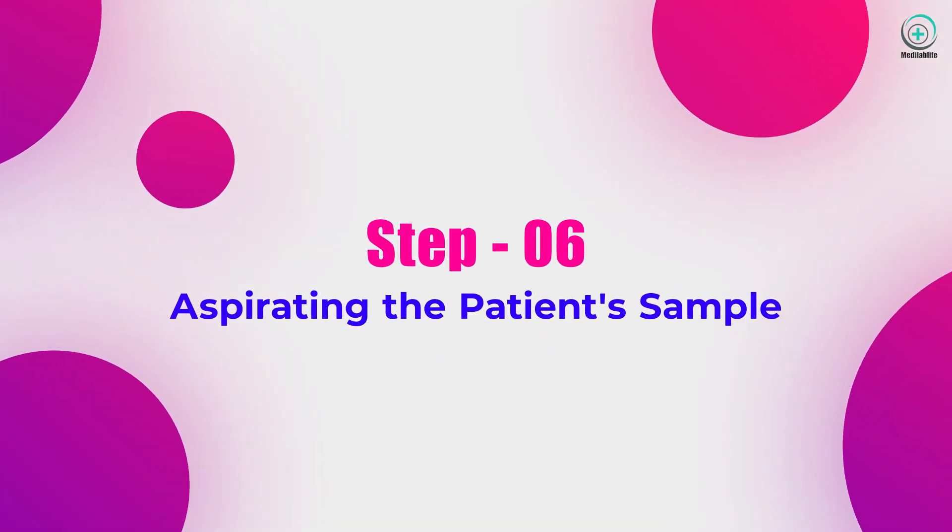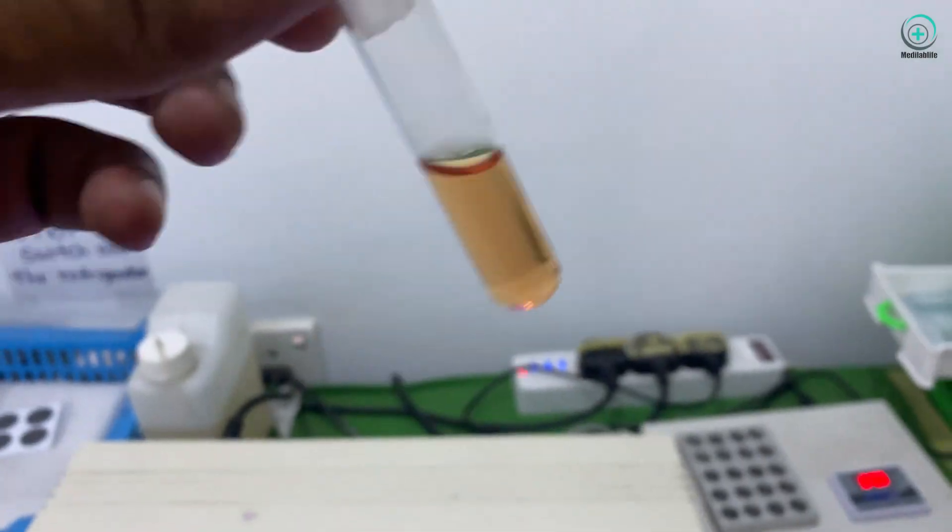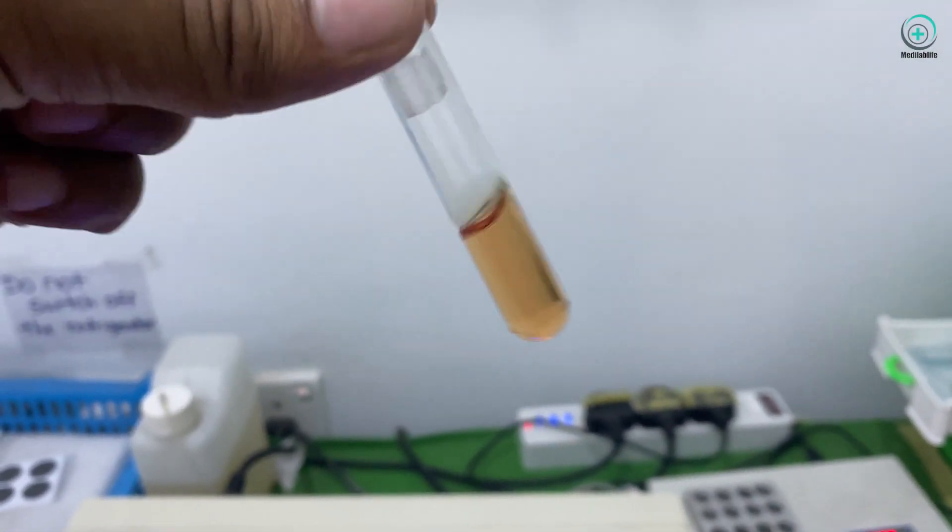Step 6: Aspirating the patient sample. Aspirate the con tube containing the patient's blood sample mixed with reagent using a micropipette.